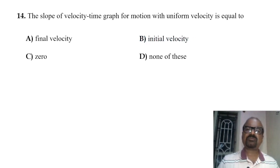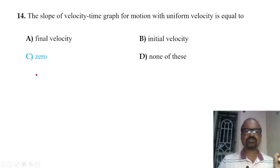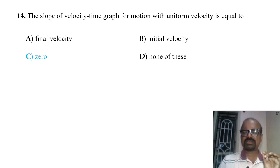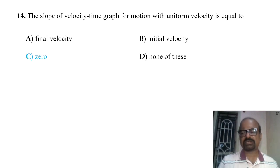The slope of the velocity-time graph for motion with uniform velocity: since uniform velocity means constant velocity, the graph is a straight line parallel to the x-axis, giving a slope of zero.